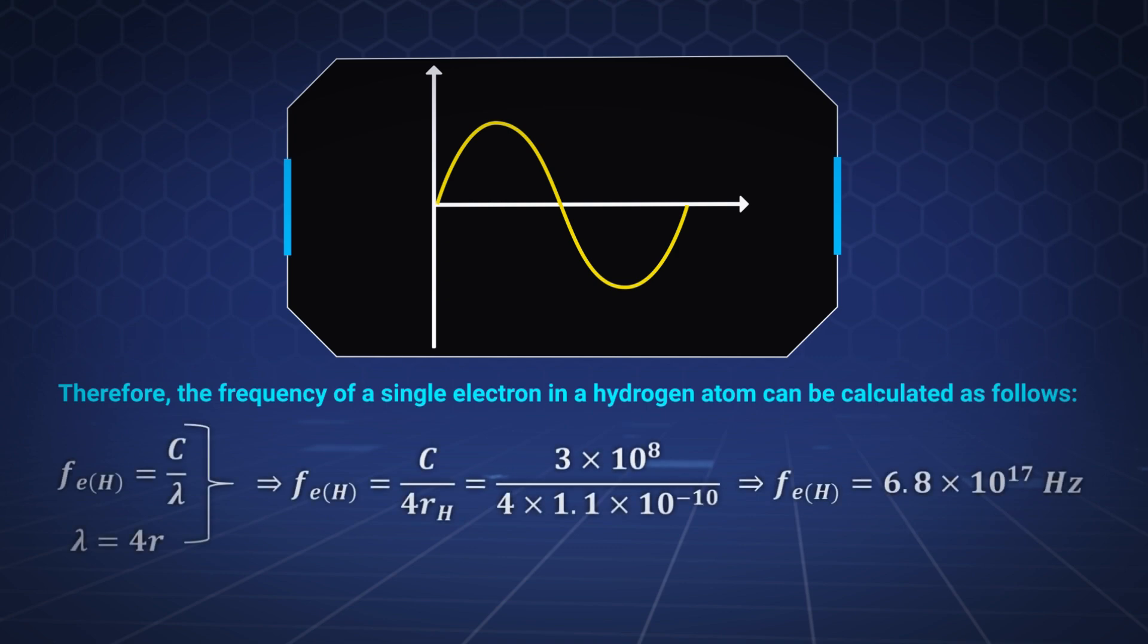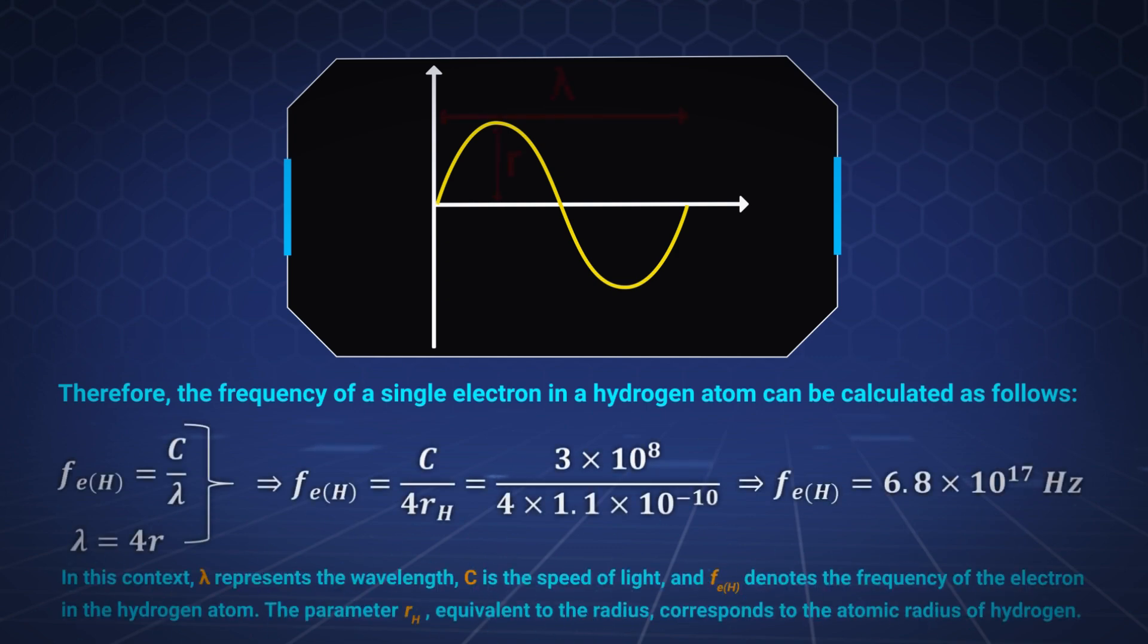Therefore, the frequency of a single electron in a hydrogen atom can be calculated as follows. In this context, lambda represents the wavelength, c is the speed of light, and f of e of h denotes the frequency of the electron in the hydrogen atom. The parameter r of h, equivalent to the radius, corresponds to the atomic radius of hydrogen.